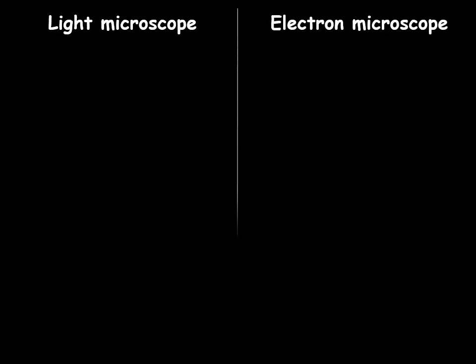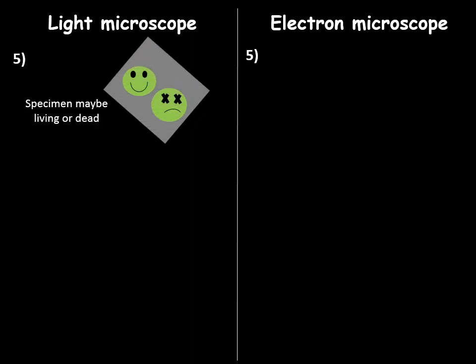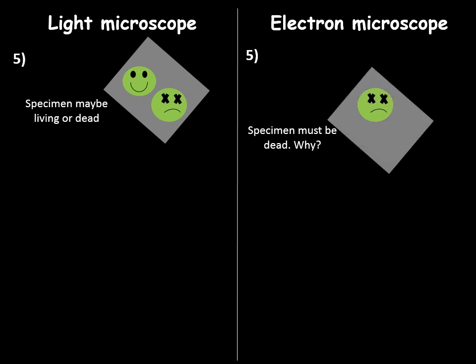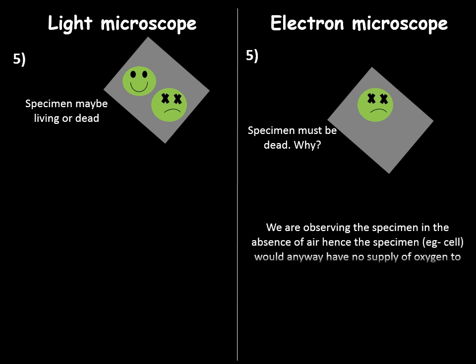The last difference between them is that the specimen that you are viewing under a light microscope can be living or dead. But the specimen that is viewed under the electron microscope must be dead. Again, you might ask why. Now see, we need air which contains oxygen to breathe. But electron microscope works with the absence of air. So the specimen would die anyway. So a dead specimen is used to view the image under an electron microscope.